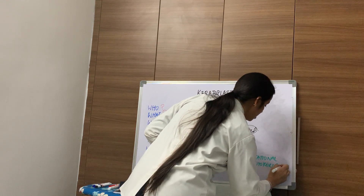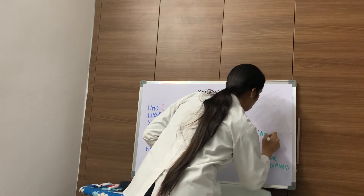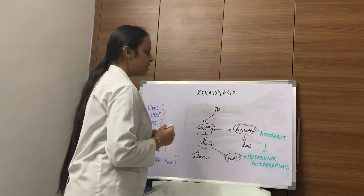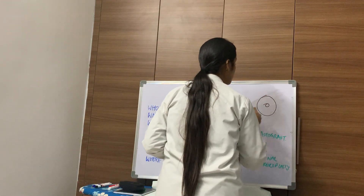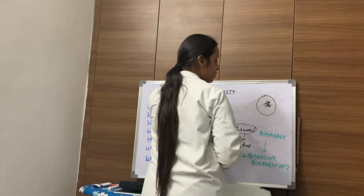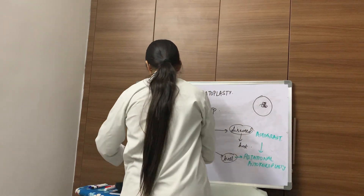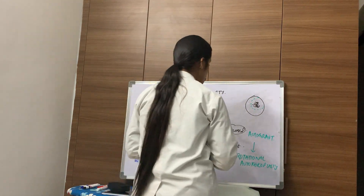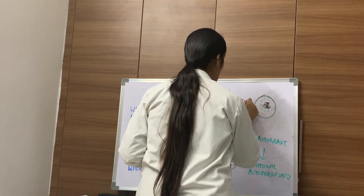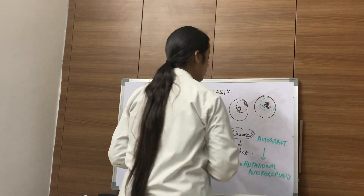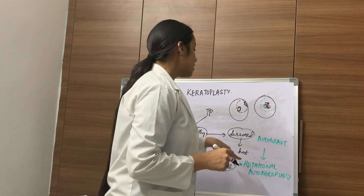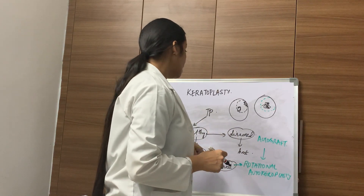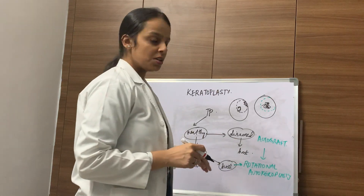In rotational autokeratoplasty, the graft is an autograft. Suppose the opacity or pathology is present in the visual axis — the corneal button is incised, rotated, and sutured so that the diseased portion moves to the periphery and the visual axis becomes clear. This is done using the same cornea of the host, without involving any donor cornea from a cadaver.